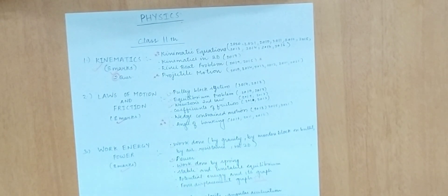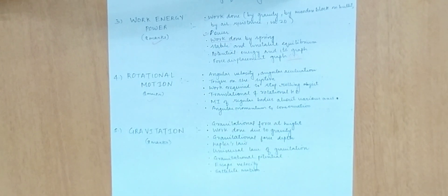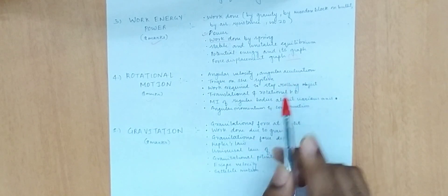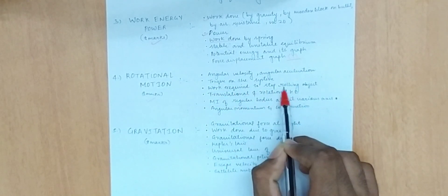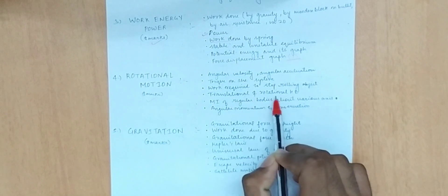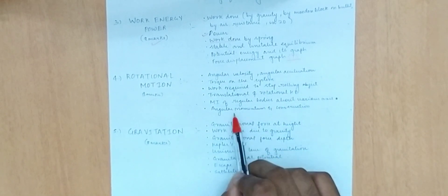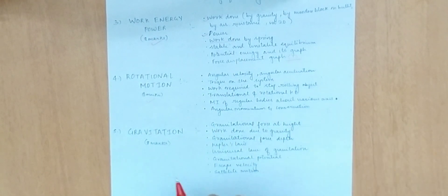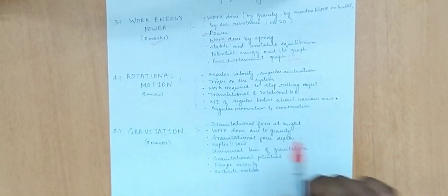In rotational motion, the important topics are angular velocity and angular acceleration, torque, work required to stop a rolling object, translational and rotational energy, moment of inertia, and angular momentum and its conservation.